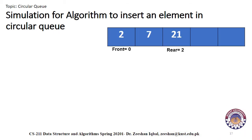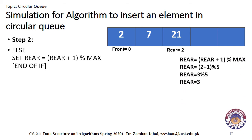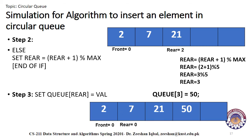Suppose we have a case where the queue has three elements, front value is zero, and rear value is two as shown in the figure. In almost all other cases except the three previously discussed, rear will be set to rear plus one modulus max. By calculating this equation, it results in the new rear value. Suppose we want to add 50 as the new value; control moves to step three and we set queue of three equal to 50. After the insertion, the queue will look like this.